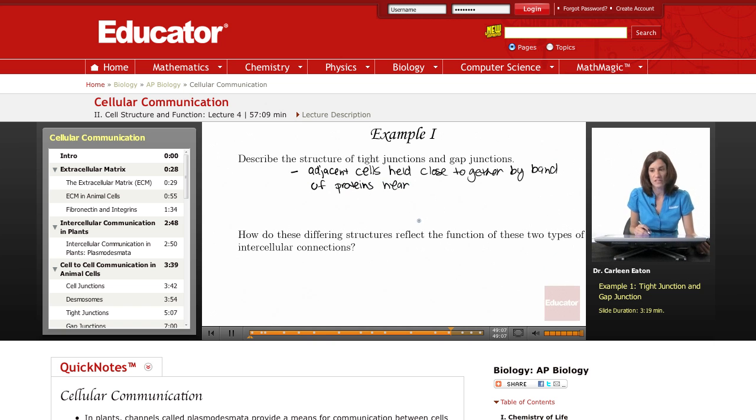Again, the apical surface is the surface that is going to be near the interior of a cavity or the lumen of a cavity. So the apical surface is going to be on this side, and the basolateral surface is going to be the other side of the cell.